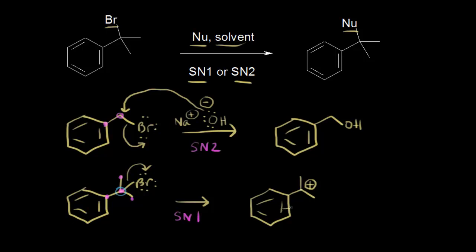Taking these pi electrons and moving them in, I can draw a resonance structure where there's now a double bond between those two carbons, those electrons form a new pi bond, and the +1 formal charge moves onto the ortho ring carbon. The presence of the benzene ring allows for resonance stabilization of the benzylic carbocation, which means substitution occurs at the benzylic position because of that resonance stabilization.